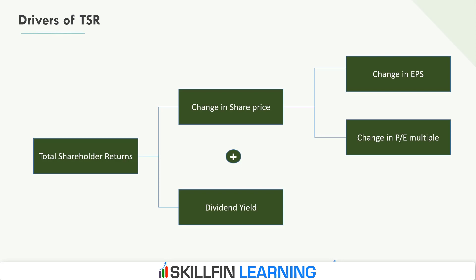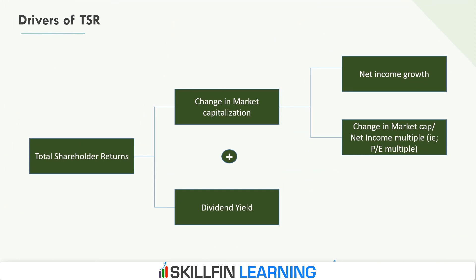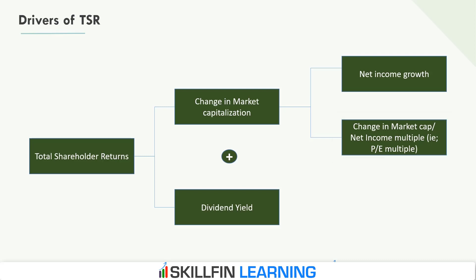If we multiply the change in share price by the number of shares we get change in market capitalization. Similarly, if we multiply change in EPS with the number of shares we get the change in net income growth for the overall company, and the price-to-earnings multiple becomes the market cap to net income multiple. So the drivers of TSR are net income growth, the change in investor expectation which is the PE multiple, plus the dividend yield.